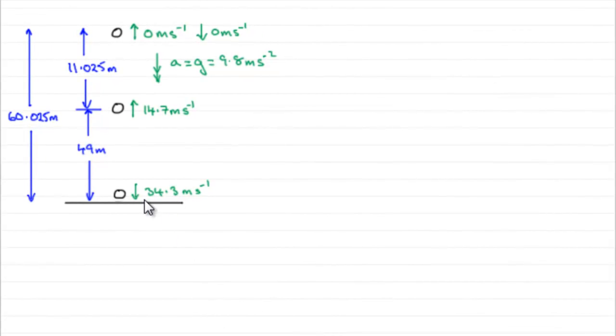Now what I've done is update the diagram again with the answer that we just found in the last part, the speed that the ball hit the ground, 34.3 meters per second.